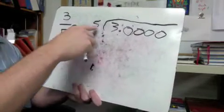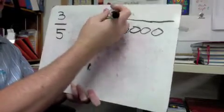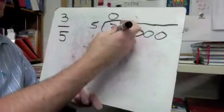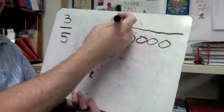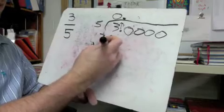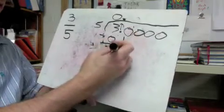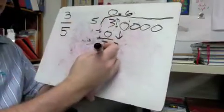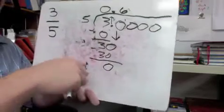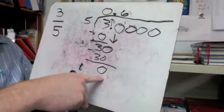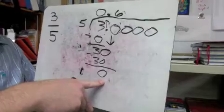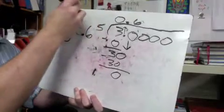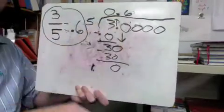Five can't go into three, so I put a zero there, meaning it couldn't go in any whole times — which makes sense since three-fifths is less than one whole. I bring the decimal point straight up. Zero times five is zero, subtract, still have three. Bring down the first zero: five goes into thirty six times; six times five is thirty, take away leaves zero. So three-fifths equals 0.6 — a terminating decimal, it just stops.